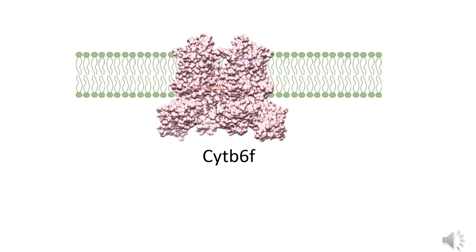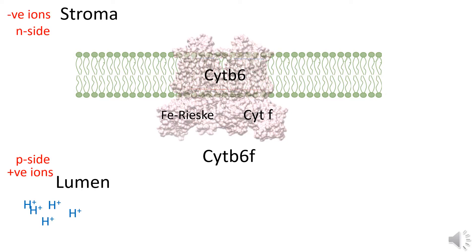An important component for the Q cycle to occur is cytochrome b6f, which is a protein embedded in the membrane. It consists of three main components: cytochrome b6, the iron-sulfur protein (also known as the Fe-S protein), and the cytochrome f component. As it is embedded in the membrane, there are two sides: the stromal side and the lumen side of the thylakoid membrane.